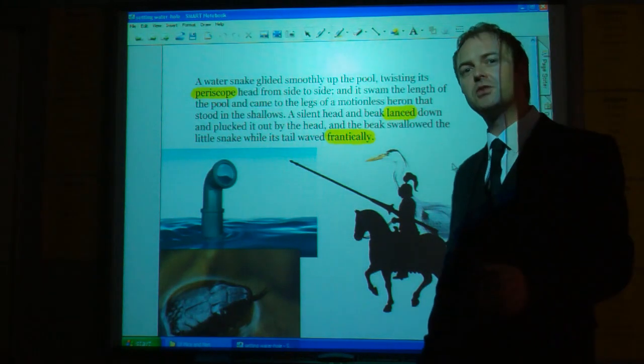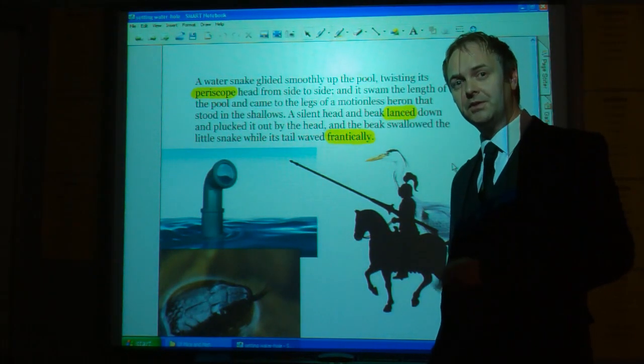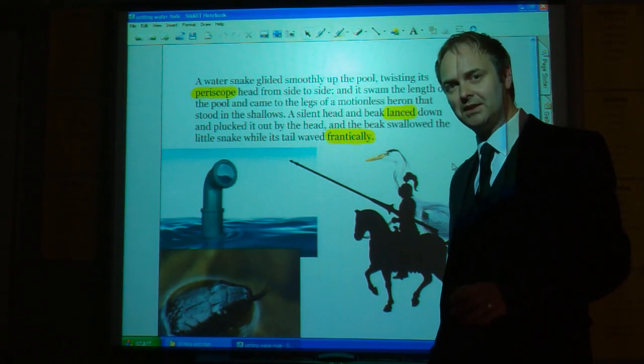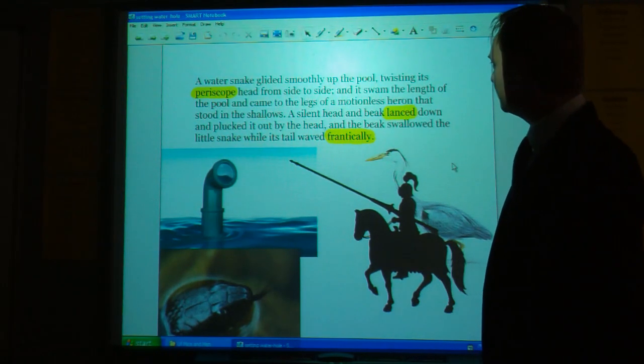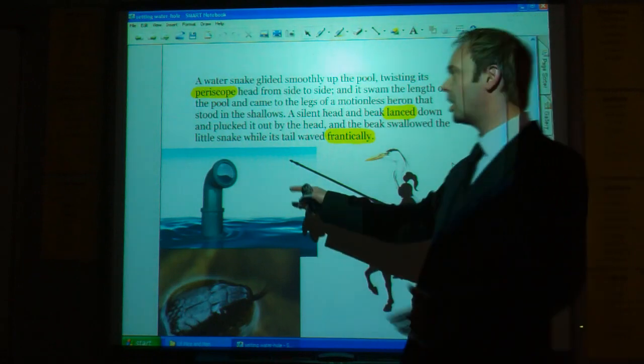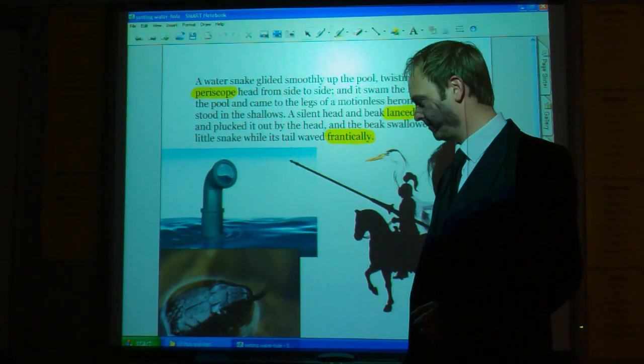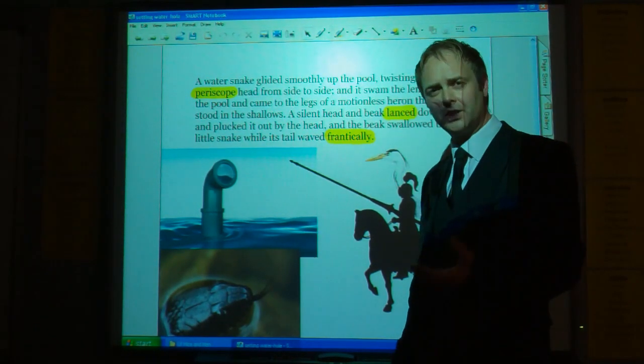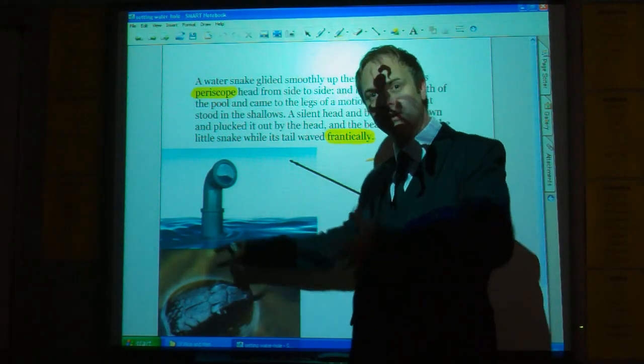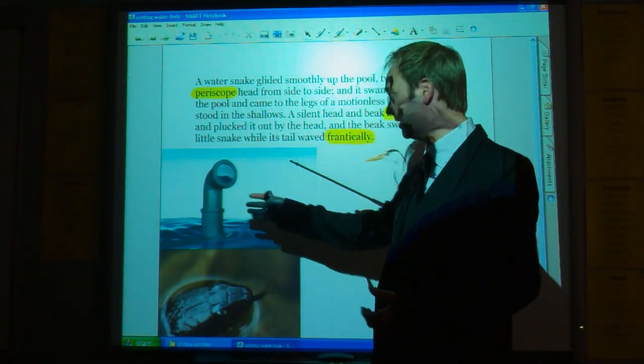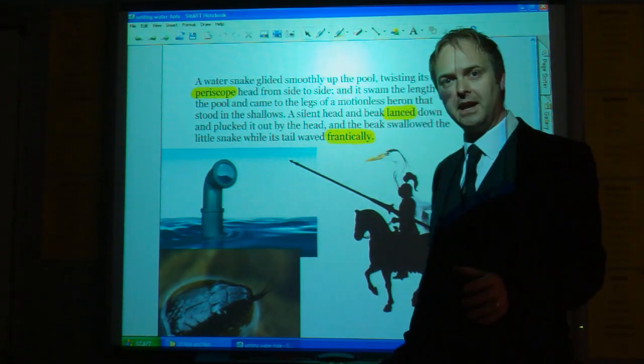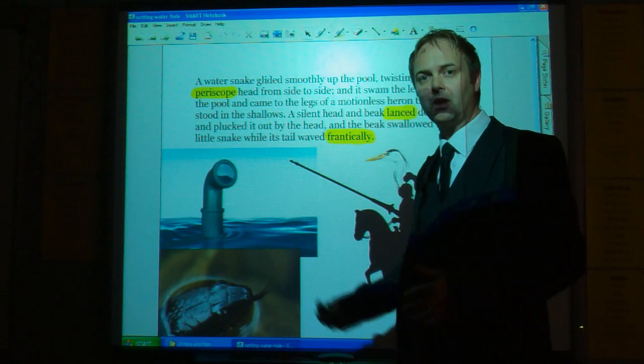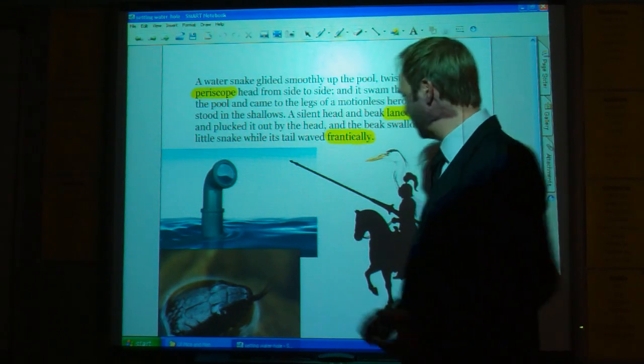But it's when we get to the description of the animals now, which have ceased being passive and are very much active, that we really get the sense of change. A water snake glided smoothly up the pool, twisting its periscope head from side to side. Obviously in terms of the image, you've got the sense of the snake's head sticking out of the water, in the same way that a submarine's periscope sticks out of the water. But the crucial thing here is that the semantic field of weaponry is being used.